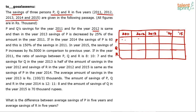To avoid confusion with P and Q as variable names, let's call P's repeated value x and Q's repeated value y. So P's savings in 2011 and 2012 are both x, and Q's savings in 2011 and 2012 are both y.